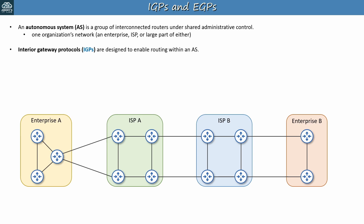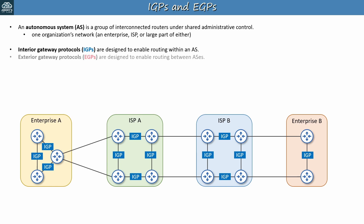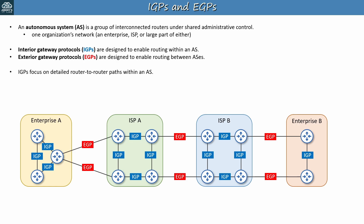In this simplified network, routers would use an IGP on links to routers within the same AS. On the other hand, exterior gateway protocols, or EGPs, are designed to enable routing between ASs — routers would use them on links between ASs. Because their purposes are different, IGPs and EGPs take different approaches to sharing routing information. IGPs focus on detailed router-to-router paths within an AS, whereas EGPs focus on higher-level AS-to-AS paths between ASs, hiding the internal details of each AS from the others.